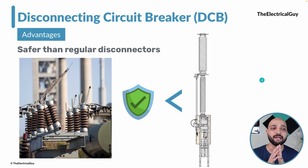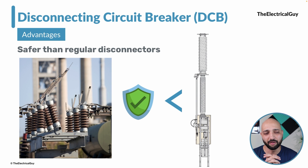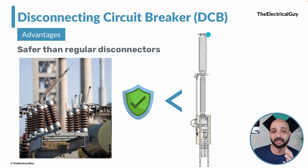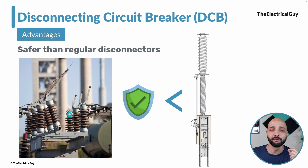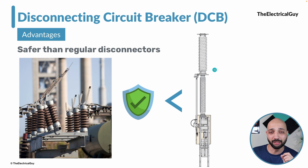The next advantage is that these are safer than regular disconnectors. Air-insulated disconnectors are not as safe when compared to a disconnector function performed inside the interrupter filled with SF6 gas. Arcing and sparking that normally happens when opening a disconnector is completely eliminated with the disconnecting circuit breaker, making it definitely superior from a safety aspect.